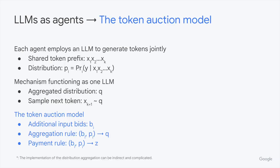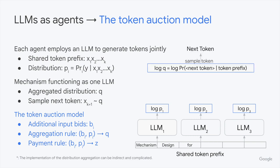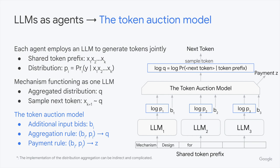Our token auction model adds a multi-agent dimension. LLMs representing distinct generative preferences process the same token sequence. The auction mechanism then aggregates their proposed distributions and bids, and determines the next token to be sampled, as well as how much each agent pays.